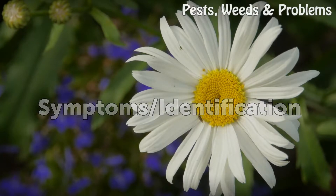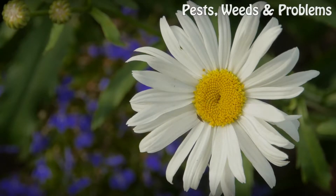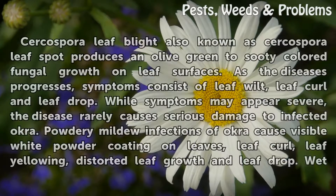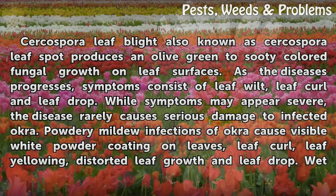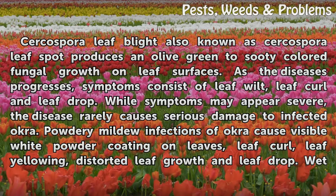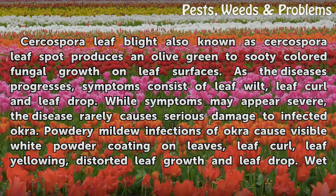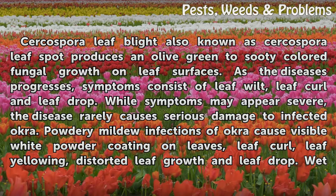Symptoms and Identification. Cercospora leaf blight, also known as Cercospora leaf spot, produces an olive green to sooty colored fungal growth on leaf surfaces. As the disease progresses, symptoms consist of leaf wilt, leaf curl, and leaf drop. While symptoms may appear severe, the disease rarely causes serious damage to infected okra.